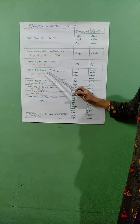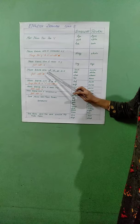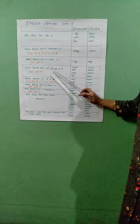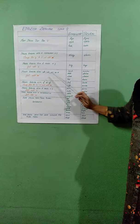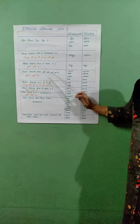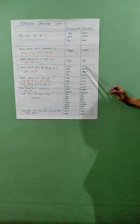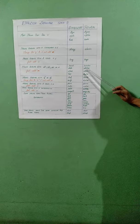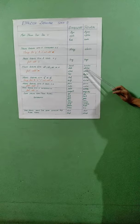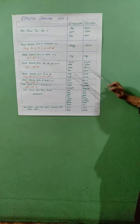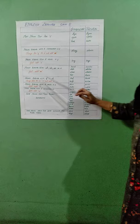The next rule: nouns which end with CH, SH, SS, or X. These words can be changed into their plural forms by just adding ES. For example, the word bench, ending in CH, becomes benches. Dish, ending in SH, will be converted into dishes. Class, ending in SS, becomes classes. And box, ending in X — you add ES and it becomes boxes.